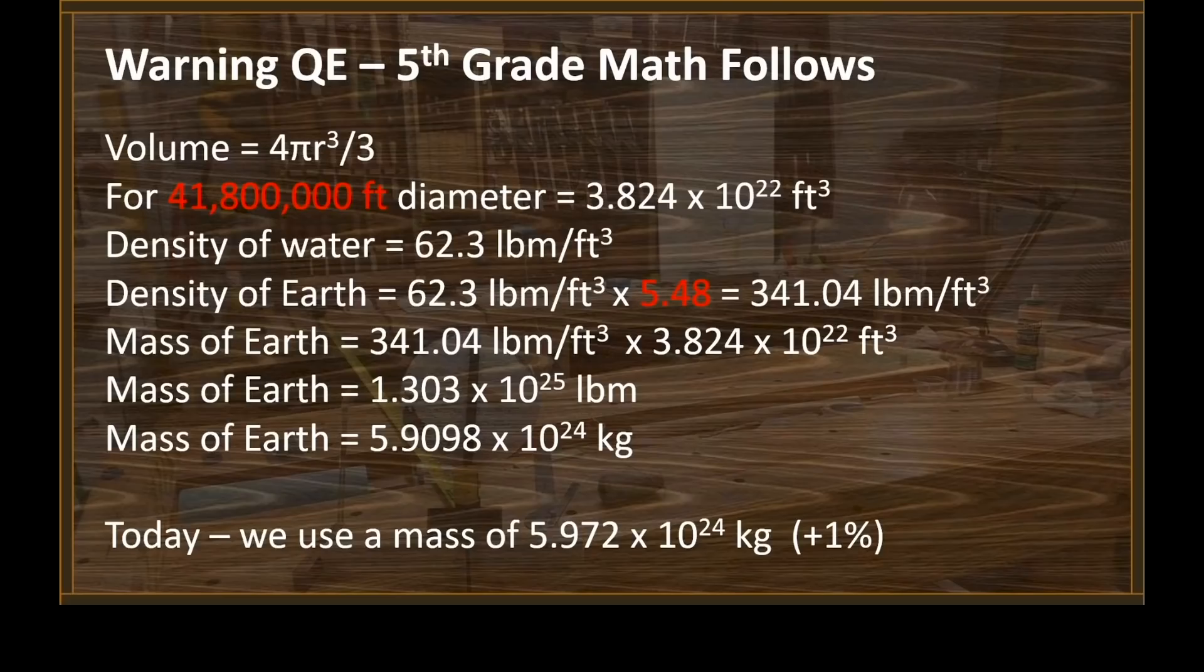Notice the little M behind the LB. That stands for pounds mass. We use pounds as both mass and force. If it had been a force, I would have written LBF. All right, back to this. Mass of the Earth is, therefore, 341.04 pounds per cubic foot times 3.824 times 10 to the 22nd cubic feet, or a mass of 1.303 times 10 to the 25th pounds. That's pounds mass. We can convert that to kilograms by dividing by 2.205, and you end up with 5.9098 times 10 to the 24th kilograms. That's within 1% of the number we use today.